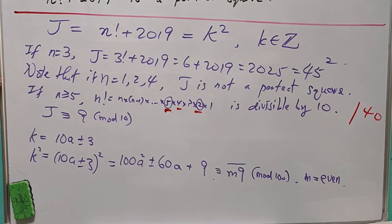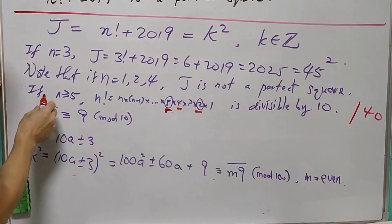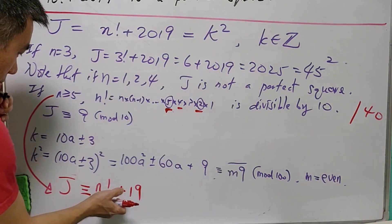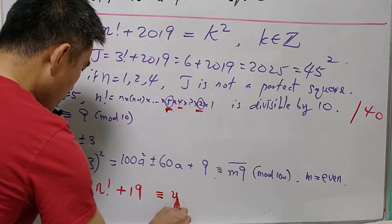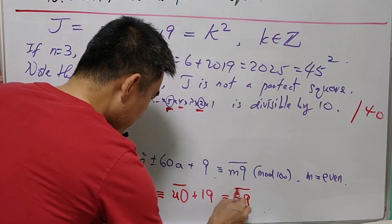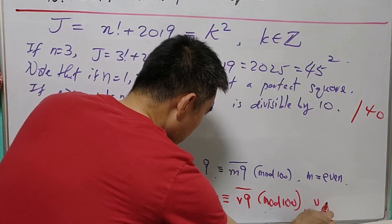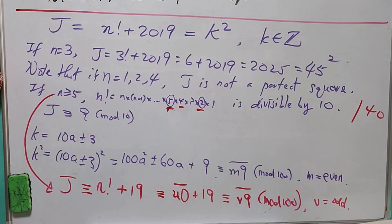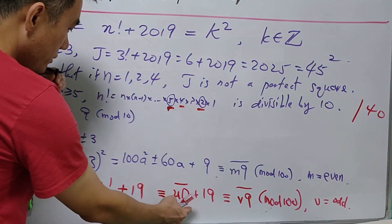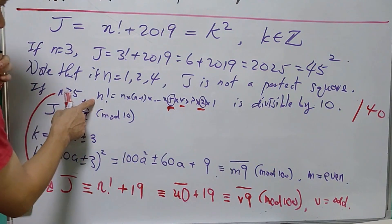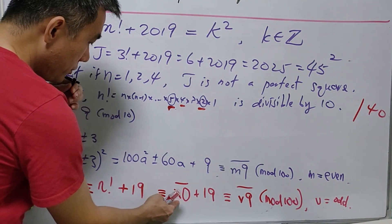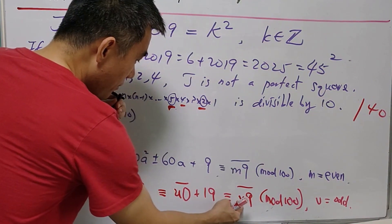And what does it mean? If n! is divisible by 40, this means that when n ≥ 5, the last two digits of j will be n! + 19 = u0 + 19 = v9 (mod 100), where v is an odd number. When n ≥ 5, the last two digits of n! will be u0, where u is an even number, because n! is divisible by 40. Since this is an even number, u0 + 19 will equal v9 for some odd number v.